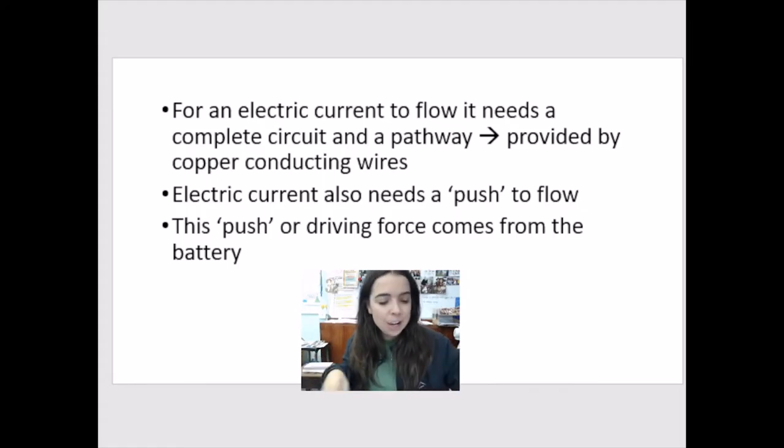So this is just a reminder that for electric current to flow, it needs a complete circuit, a pathway. We use conducting wires. Generally, copper can be other things. It also needs the electrons, the current, the charges. They need a push. They need to flow. And that comes from the battery.